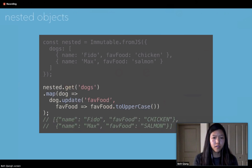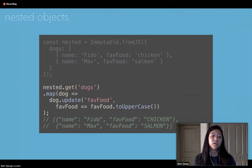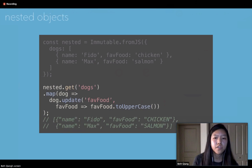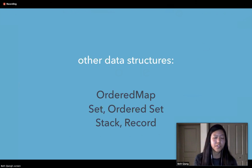There are also situations where instead of just setting a value for a key, you want to run a function through it. In those cases you can call update or updateIn depending on whether you're accessing a nested object. For example, you can get the list of dogs and map over it to update every dog's favorite food to uppercase. Immutable JS also includes other data structures such as OrderedMap, Set, OrderedSet, Stack, and Record.